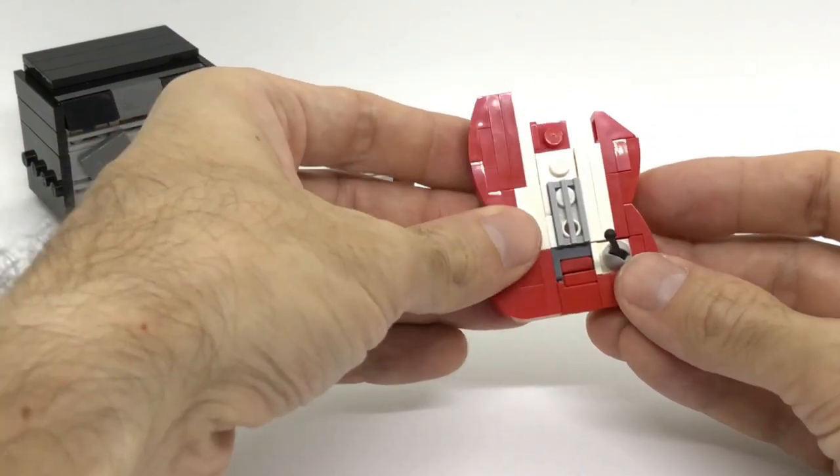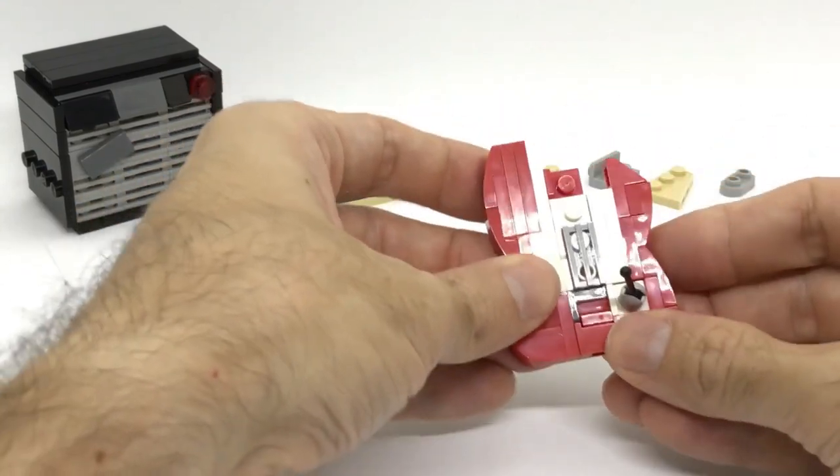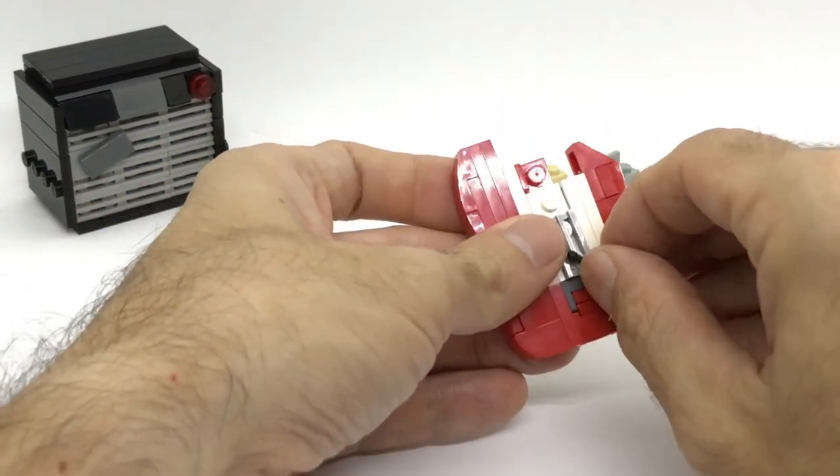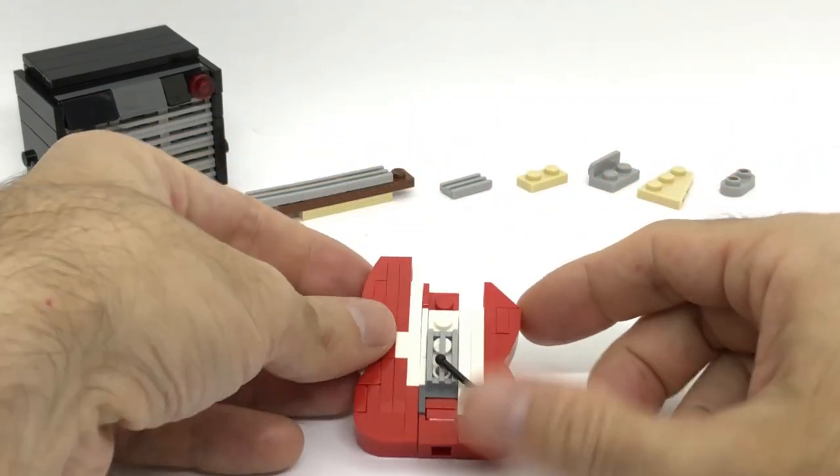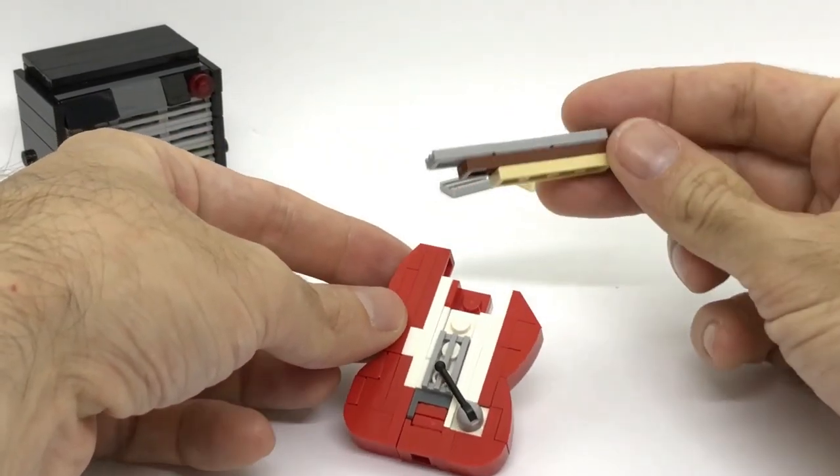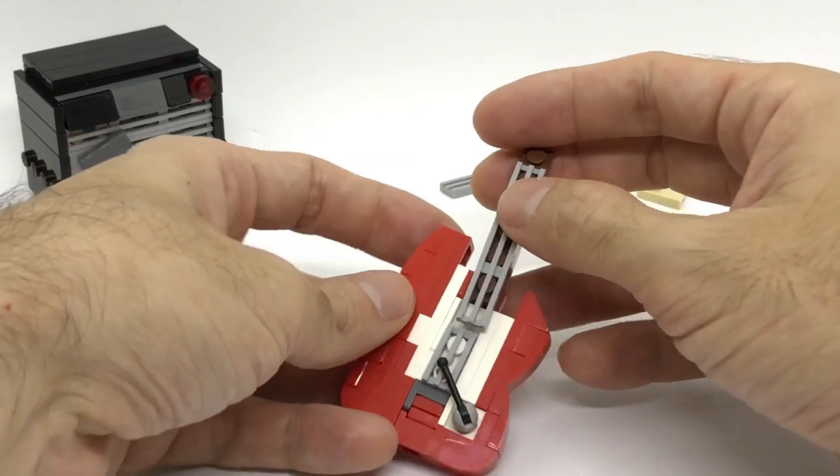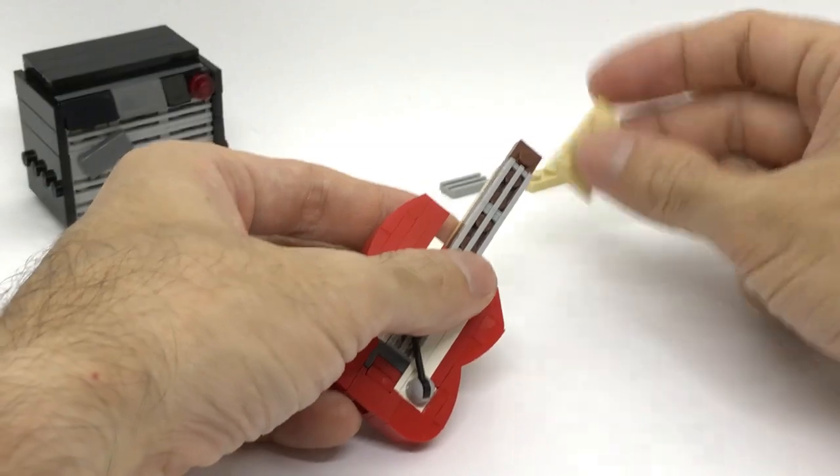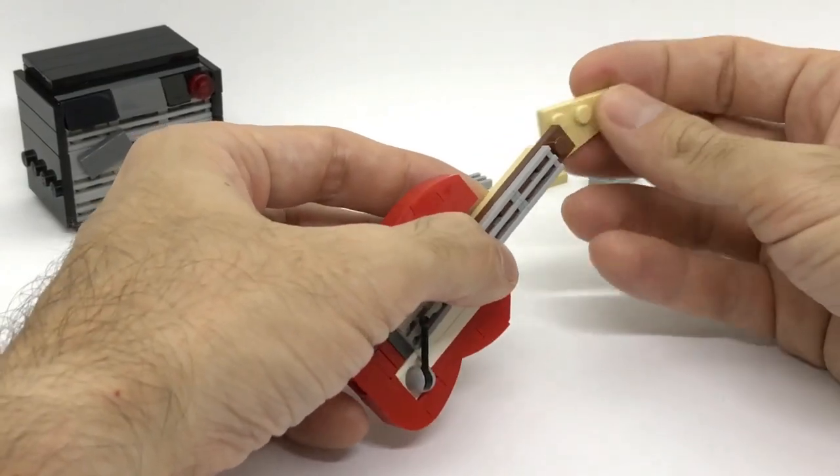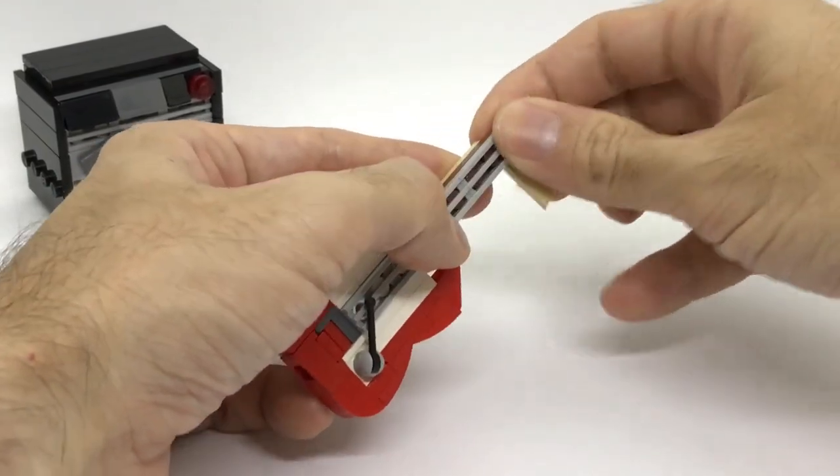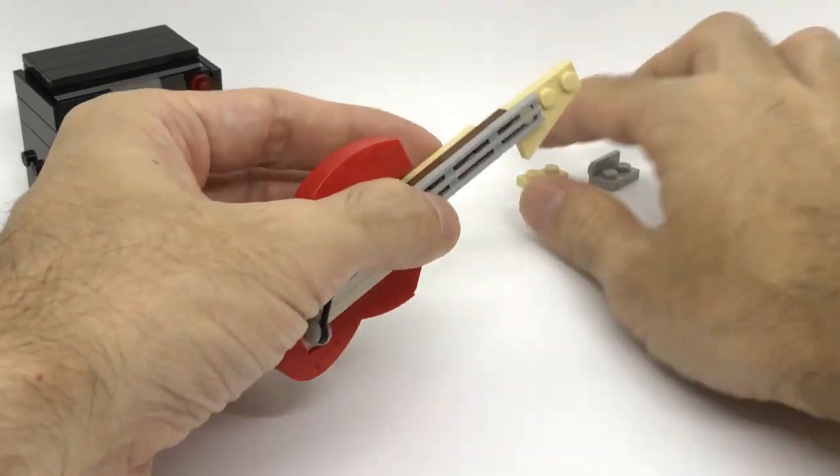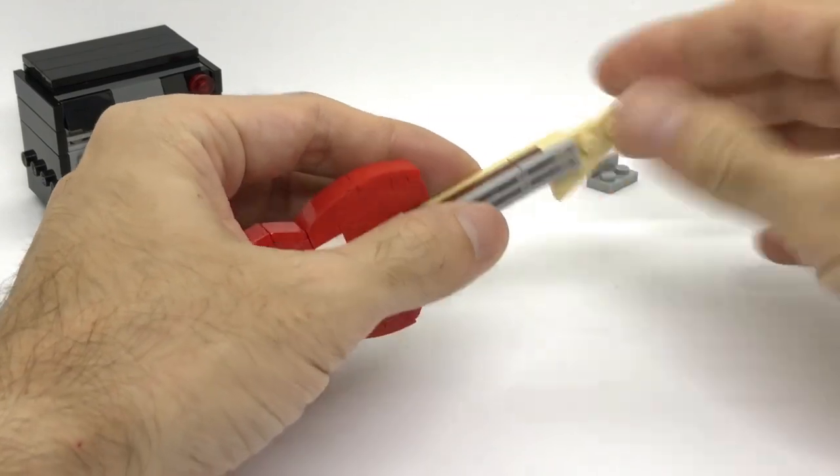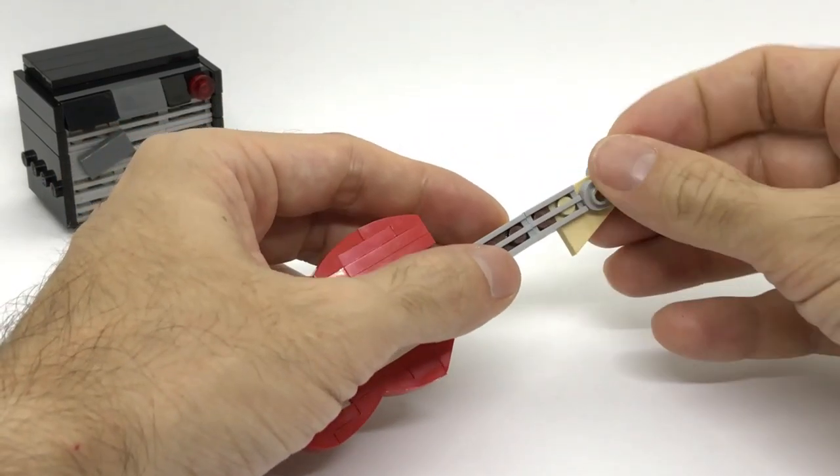Everything is kept together by only one stud, but it doesn't move so much because everything is pressed together, so there's not much wiggling around. Nothing very difficult for the rest of the build. We continue with the same pattern, we added some brown and tan color, and a couple of details on the top, again with brackets and a rounded modified one by two.